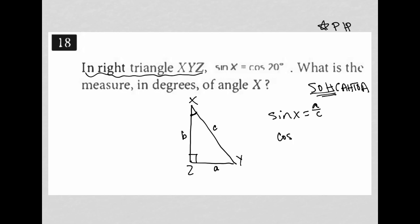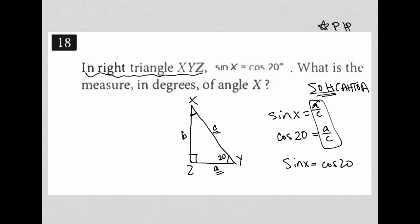I'm told that sine of X equals cosine of 20. The cosine of an angle is adjacent over hypotenuse. If this angle were 20 degrees, that would also give a over c — which means these two ratios equal each other. So sine of X equals cos(20) only if the angle at Y down here is 20 degrees.